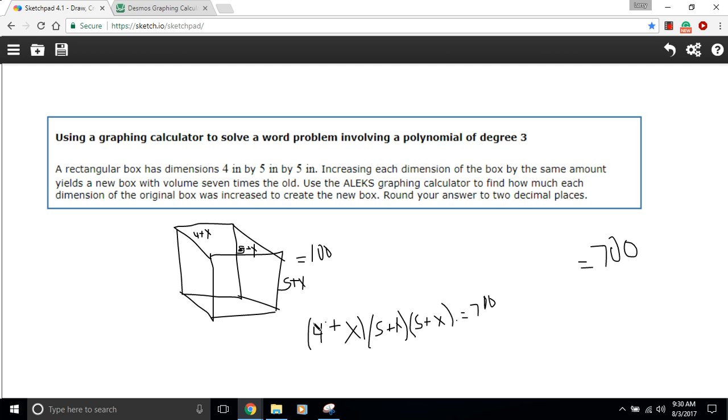So what we want to do next is multiply this out. Let's see. I'll do the 5 plus x squared first. That's going to be x squared and 10x and 25. Okay, and now we'll take this and multiply it by each of these terms.